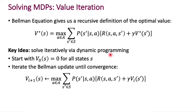You start with values set to zero for all states s, and then at every subsequent iteration you set V_{i+1} of s to the right-hand side, which depends on V_i — not V_{i+1}. The index refers to the iteration number. At each next iteration, the value function is a function of the value function as it currently stands; you're plugging the current value function into the Bellman equation.